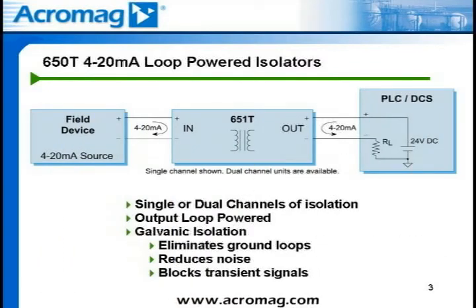Two-wire isolators fit applications where an isolator is required and a power supply is in series with the output signal. The 651T and 652T transmitters and the 653T signal splitter provide input to output isolation and are output loop powered, which means 12 to 50 volts DC is provided by a power supply on the output loop.